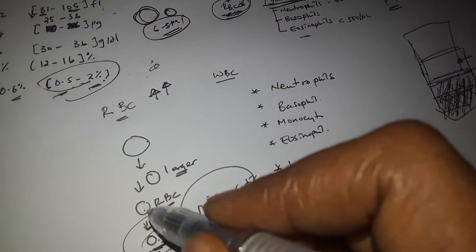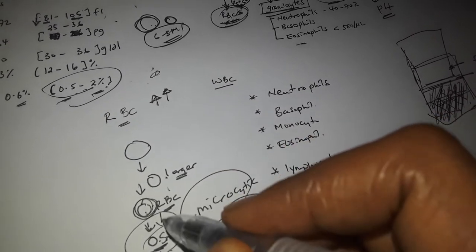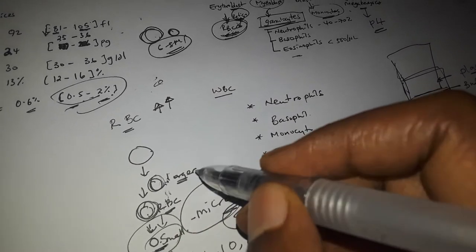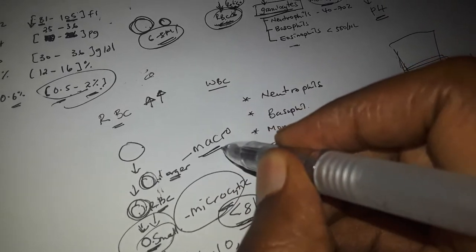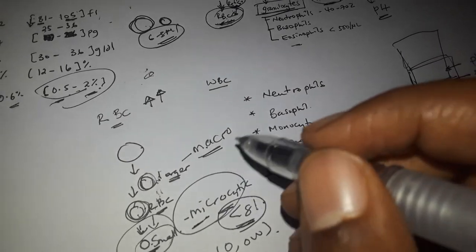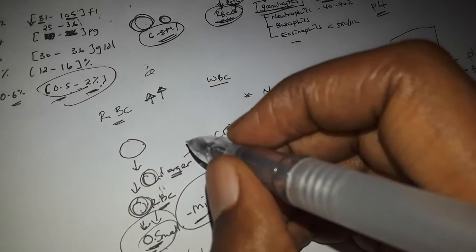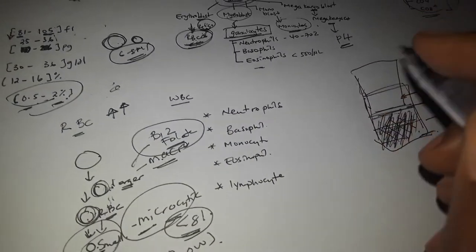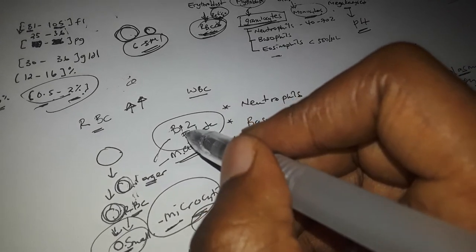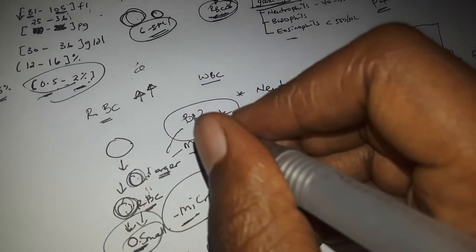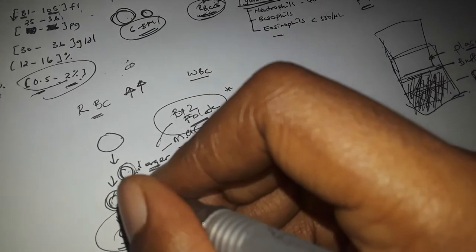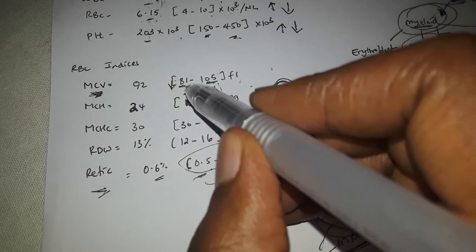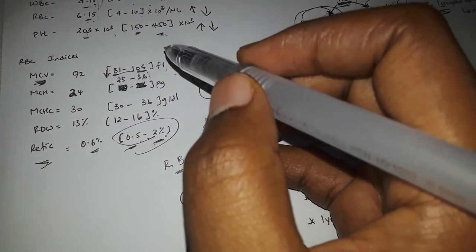Because of the extra division due to iron deficiency, the MCV will be smaller — this is called microcytic anemia. Conversely, if there is less division, the cells become larger, which is called macrocytic anemia. The MCV is therefore a very important index.